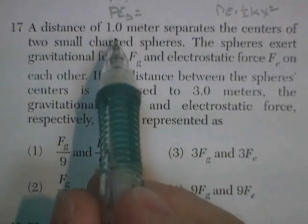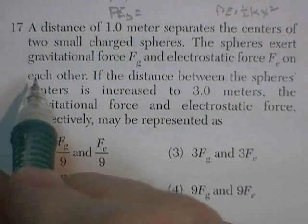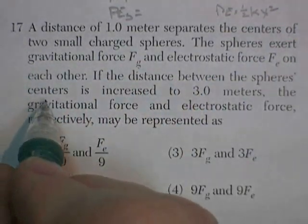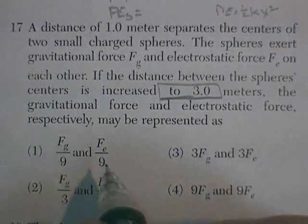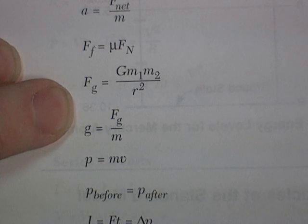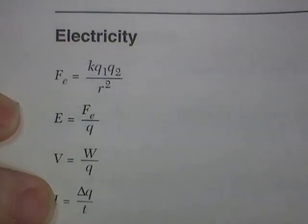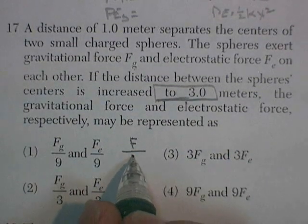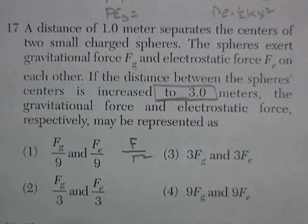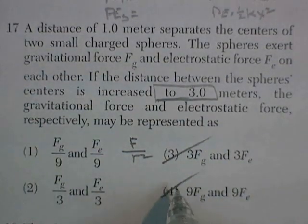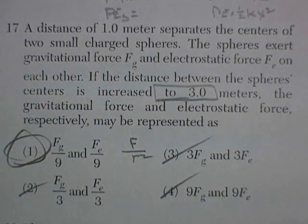Question 17. A distance of 1 meter separates the centers of two small charged spheres. The spheres exert gravitational force Fg and electrostatic force Fe on each other. If the distance between the spheres is increased to 3.0 meters, the gravitational force and electrostatic force, respectively, may be represented as... Well, the gravitational force is g m1 m2 over distance squared. And the electrostatic force is k q q over distance squared. So whereas everything else is staying the same, we're just going to represent the top portion with f and the bottom with distance squared. 3 squared is 9. So both of them would be reduced to a 9th. This indicates it would be greater. It's getting further apart. They'd both be weaker. That's if you don't square it. This is if you do square it. Hope you squared it.